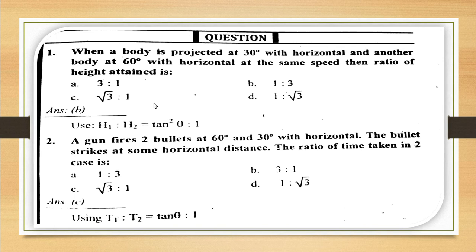We can see 30 degrees as theta and 60 degrees as 90 minus theta. 90 minus 30 is 60, so theta and 90 minus theta are complementary angles projected with the same speed. tan²θ — the value for 30 degrees is 1/√3, and 1/√3 × √3 = 1.